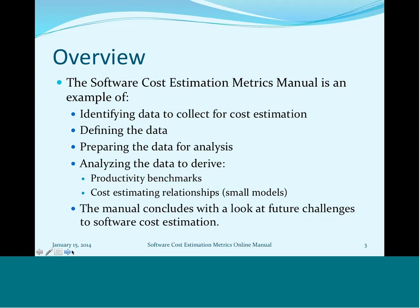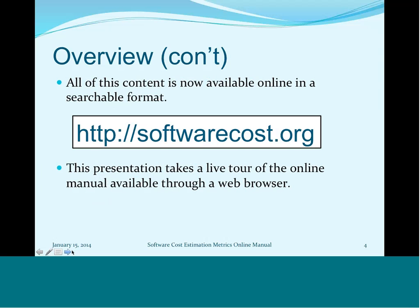The software cost estimation metrics manual is an example of identifying data to collect for cost estimation, defining the data, preparing data for analysis by comparing your data definitions to what has been collected, and analyzing data to derive productivity benchmarks for cost estimating relationships — which are very small models. The manual concludes with a look at future challenges in estimation. All content is available online in a searchable format at softwarecost.org. This presentation is a live tour of the online manual, accessible through a web browser.